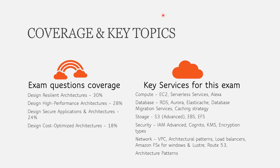For compute, key services include EC2, serverless services like Lambda, and some knowledge of Alexa — which works with Lambda and serverless architecture. You should also know concepts like placement groups and how to design resilient, distributed architecture. For example, understanding regions and availability zones, and how to design so that if one availability zone goes down, another picks up without data loss.